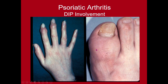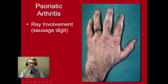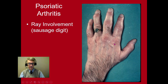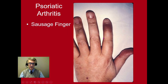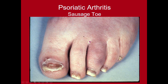This is another example of DIP involvement with swelling and the characteristic nail change that can occur with psoriasis. This is an example of ray involvement, meaning all the joints of a digit are involved with swelling — we call it ray because it's like sun rays streaming out from the center. Another name for this is sausage digit, as it can look like a sausage. Here we see a sausage finger and a sausage toe, and one can also see characteristic nail dysplasia that can occur with psoriasis.